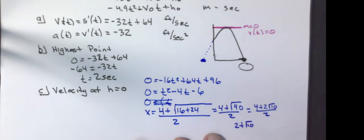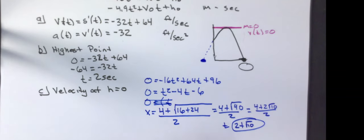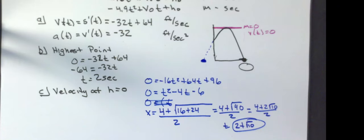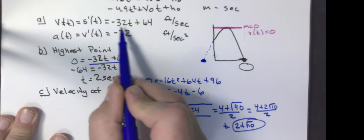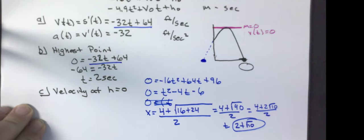Now, on a test, be careful that root 40 is 2 root 10. So I have 4 plus 2 square root of 10 over 2, which is 2 plus the square root of 10. That's the T value. I'm not going to put it into a calculator yet — I don't want to round too early. That would be the time I stick into the velocity function to figure out its velocity.